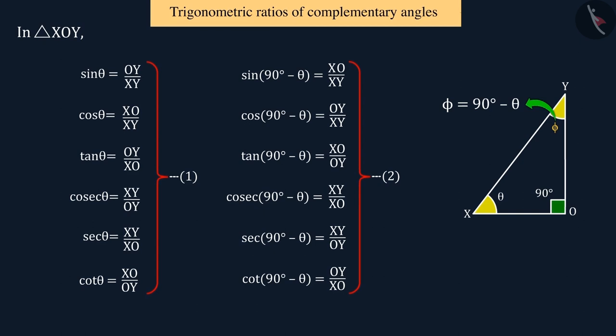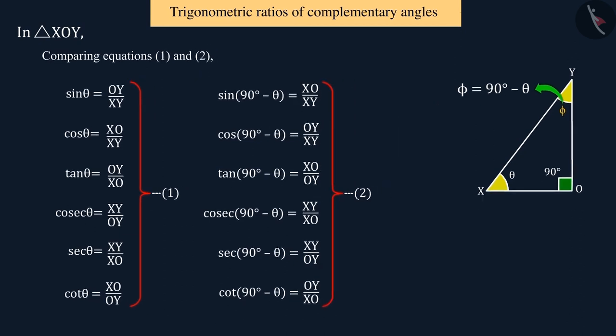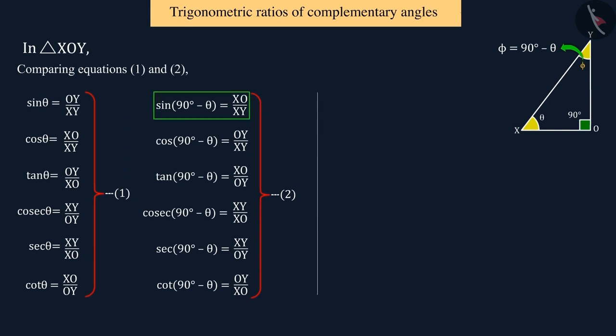Since we have to find the values of trigonometric ratios of complementary angles, let us compare equations 1 and 2. Thus, we can see that the value of sine 90 degrees minus theta is equal to the value of cos theta.